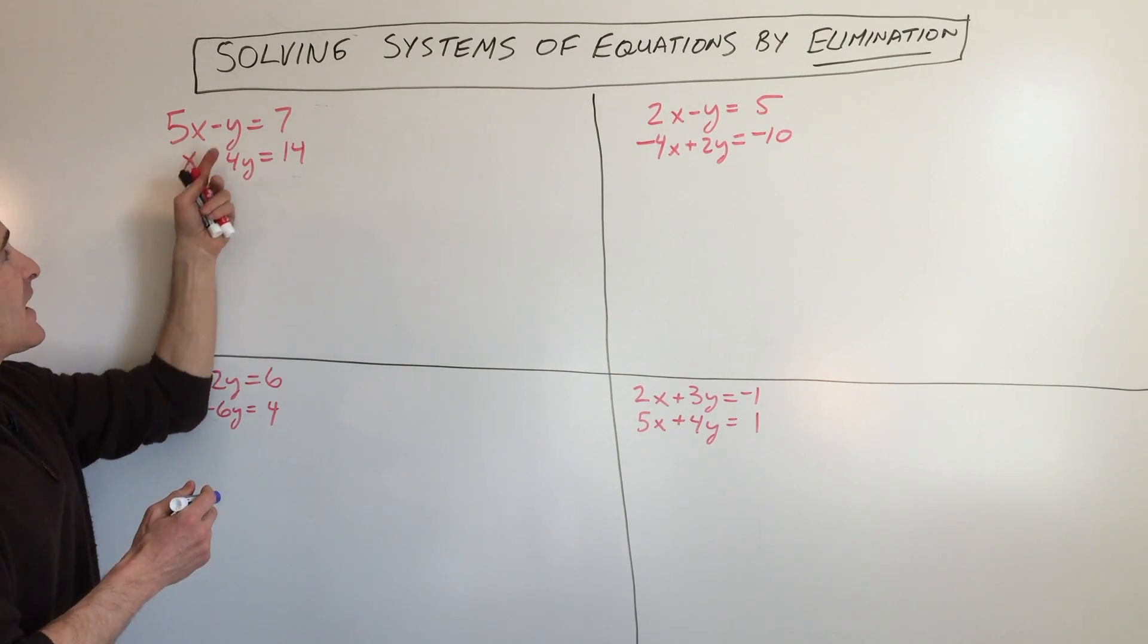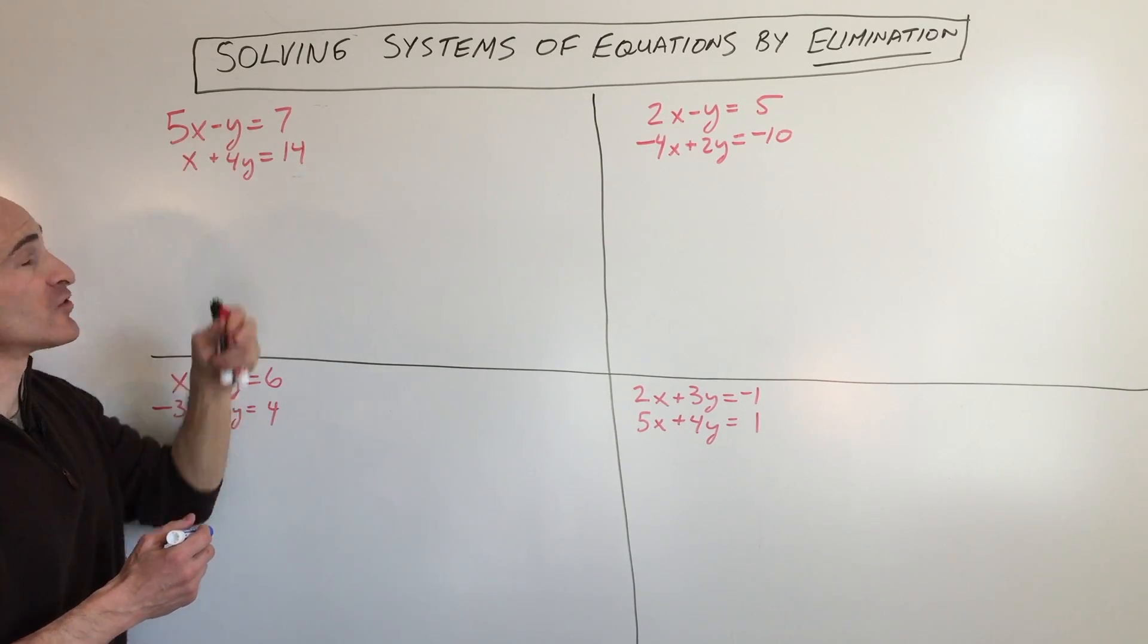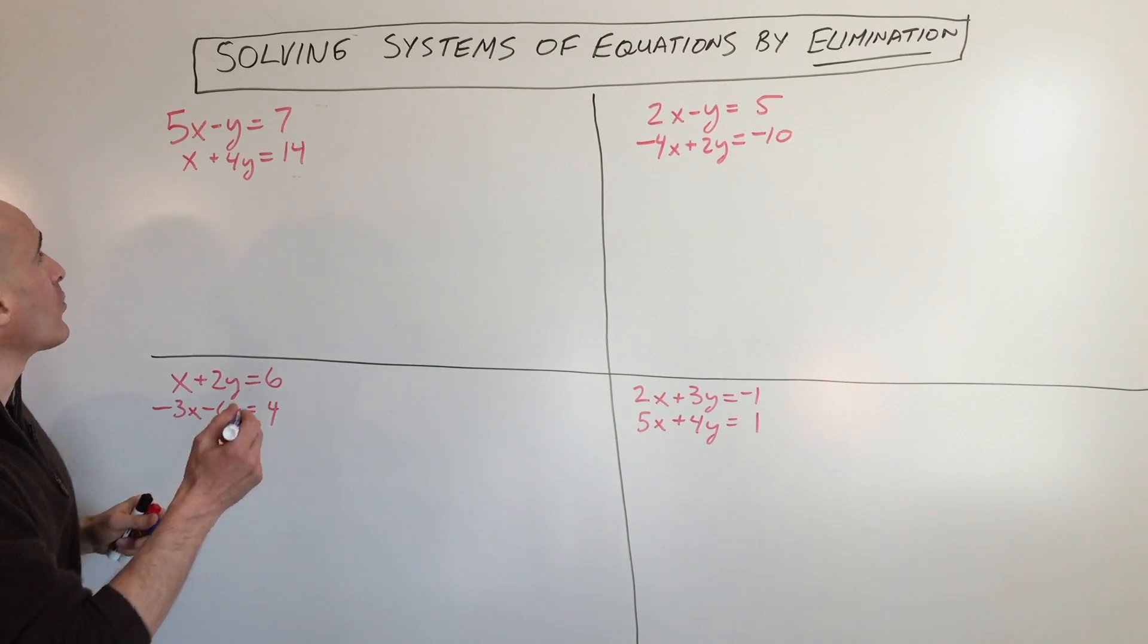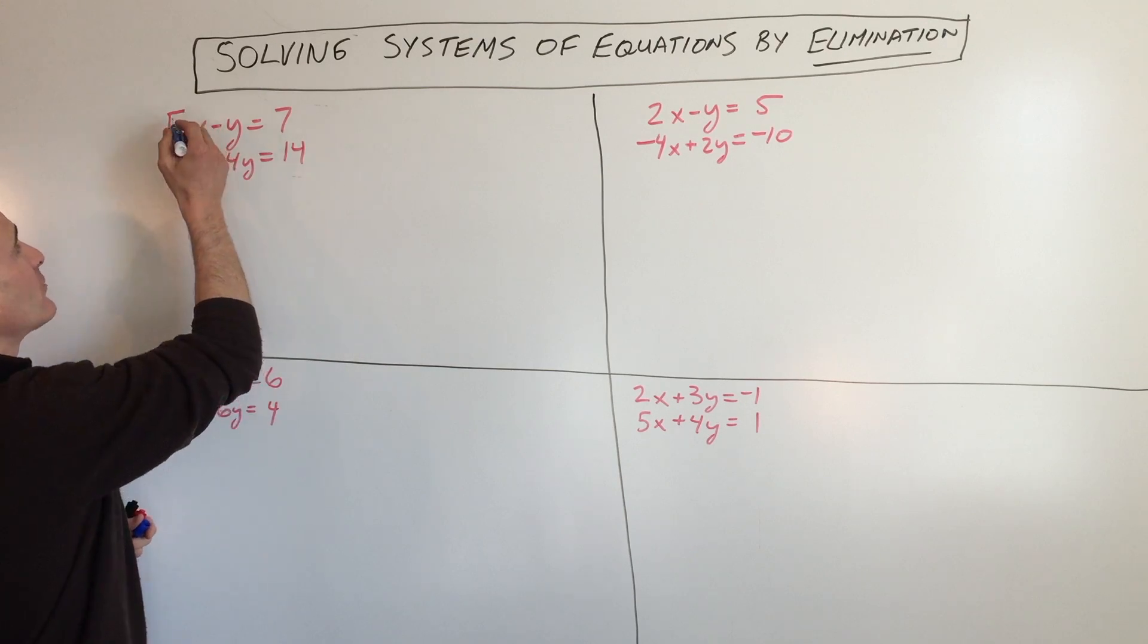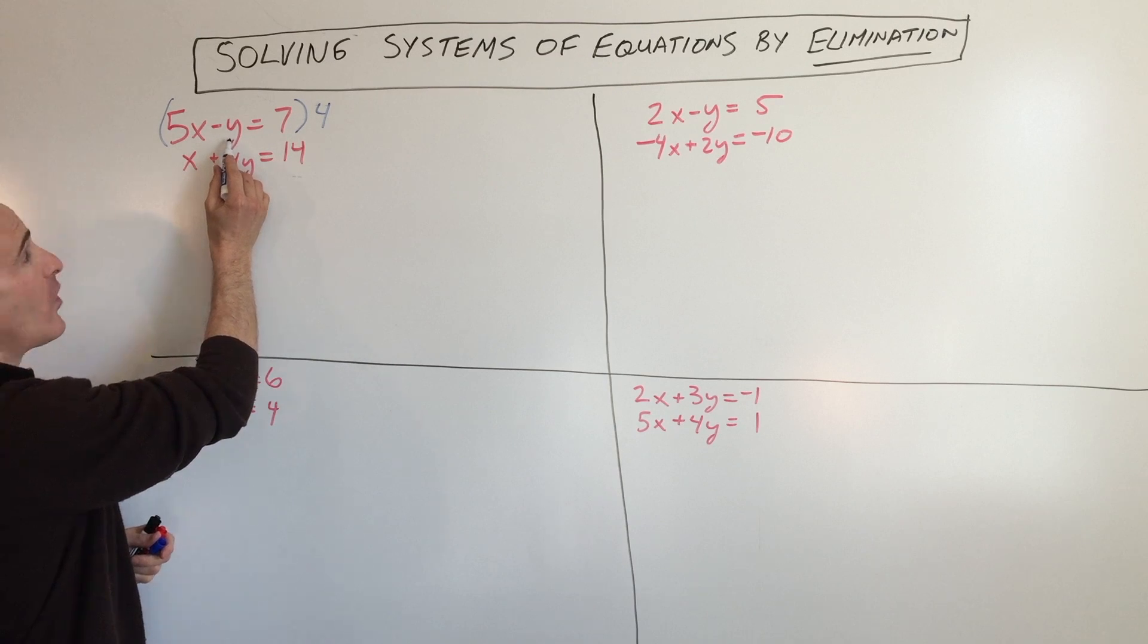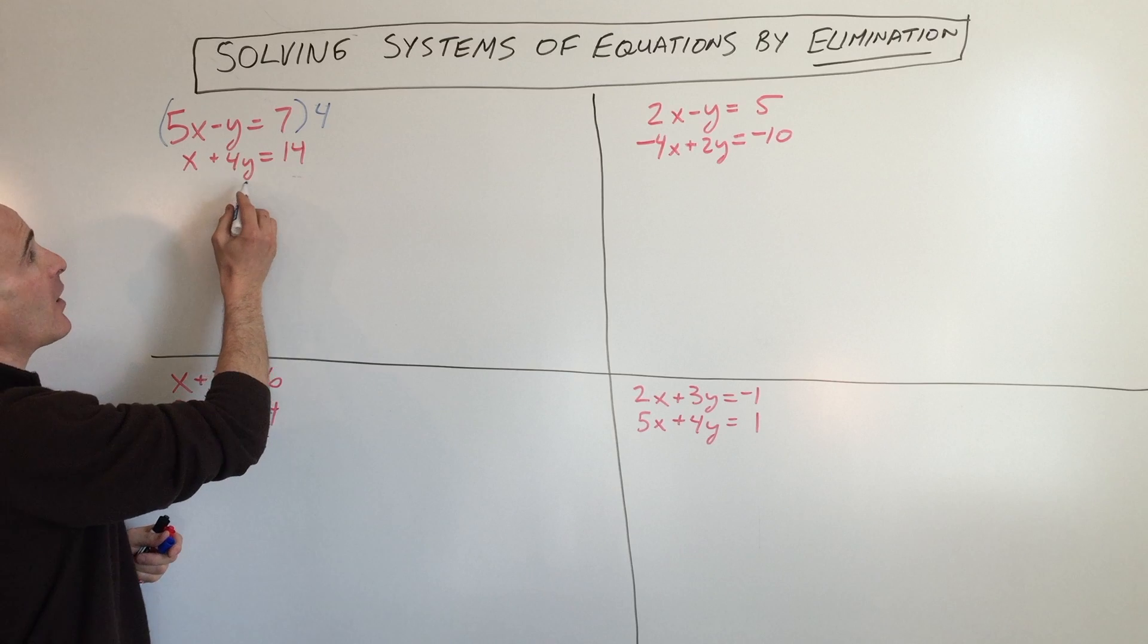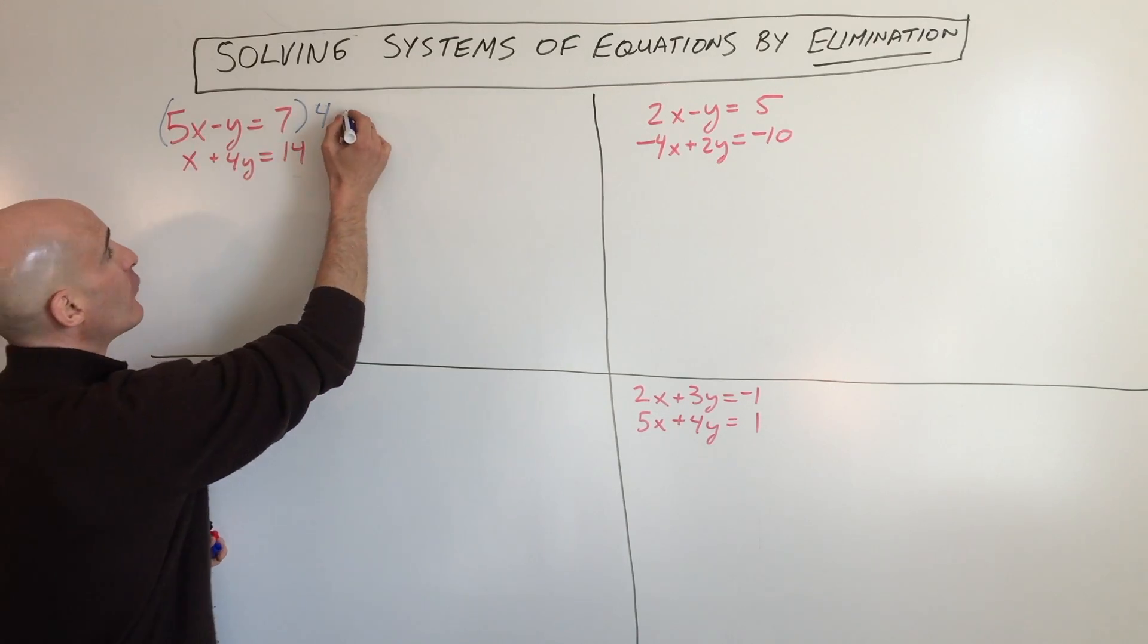You can see if we try to add these together, nothing cancels out. The x's don't cancel, the y's don't cancel. So what we're going to do is multiply this top equation times 4, because that will give us a negative 4y plus this 4y. They're going to cancel one another out. So we're going to multiply everything in the equation by 4.